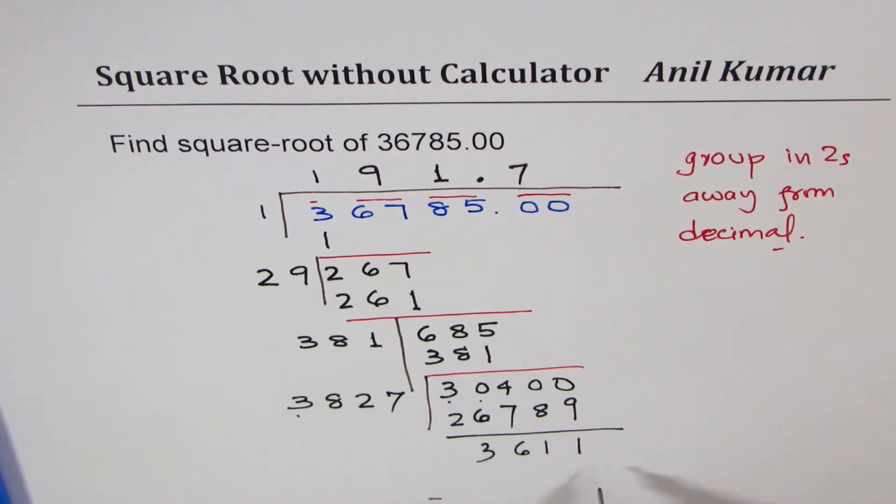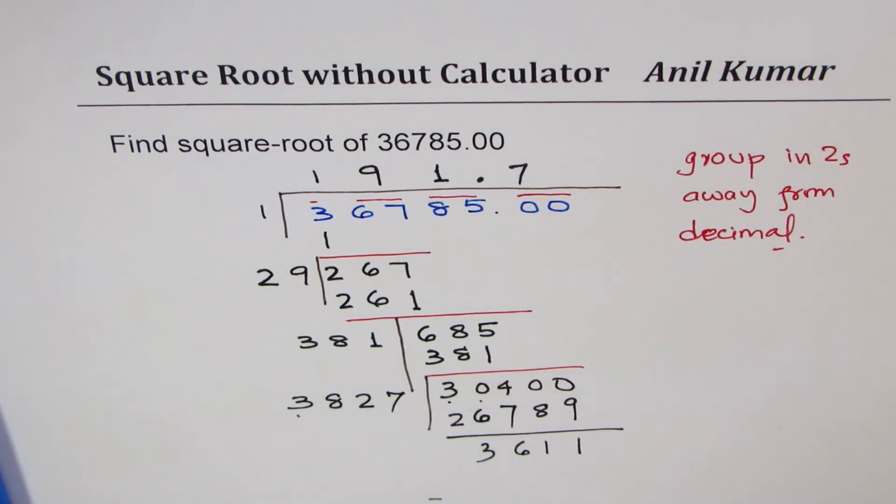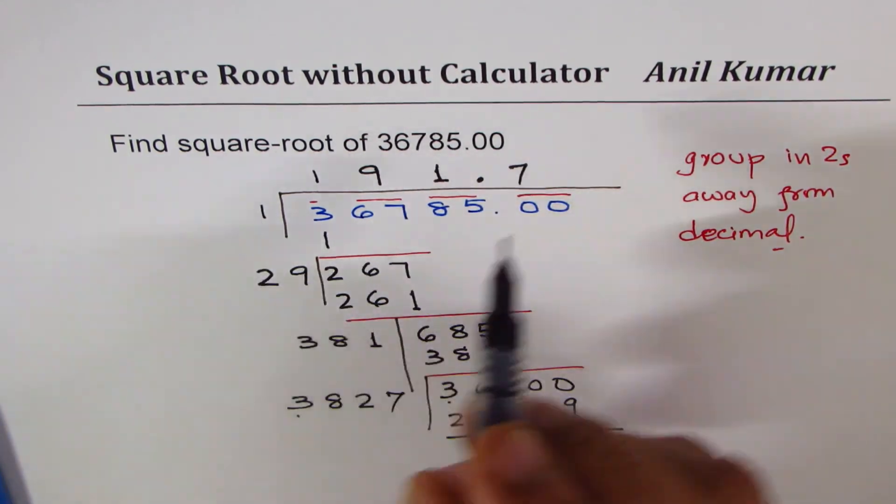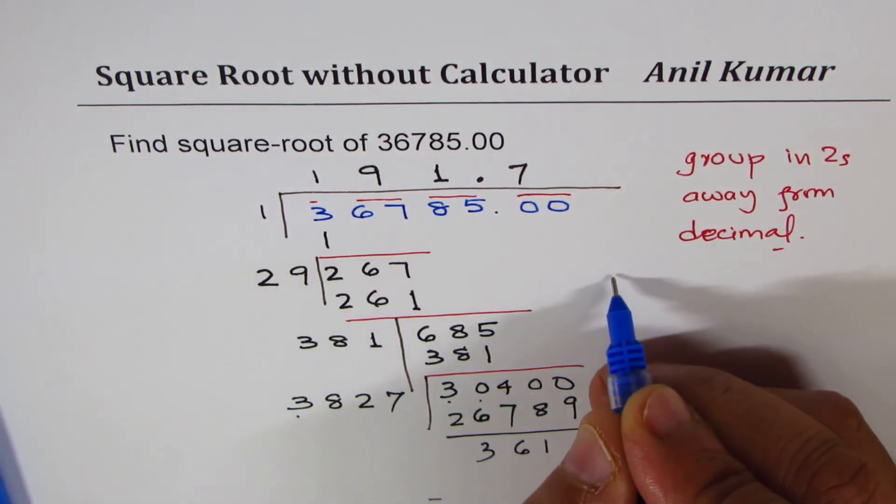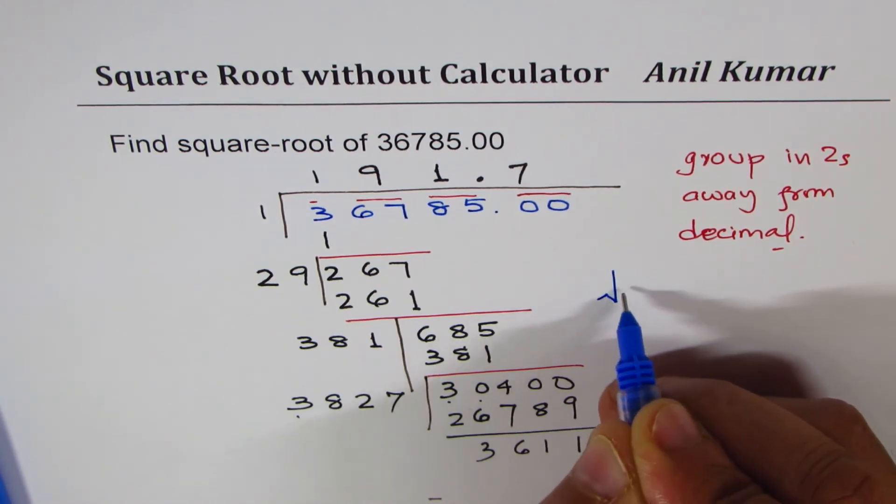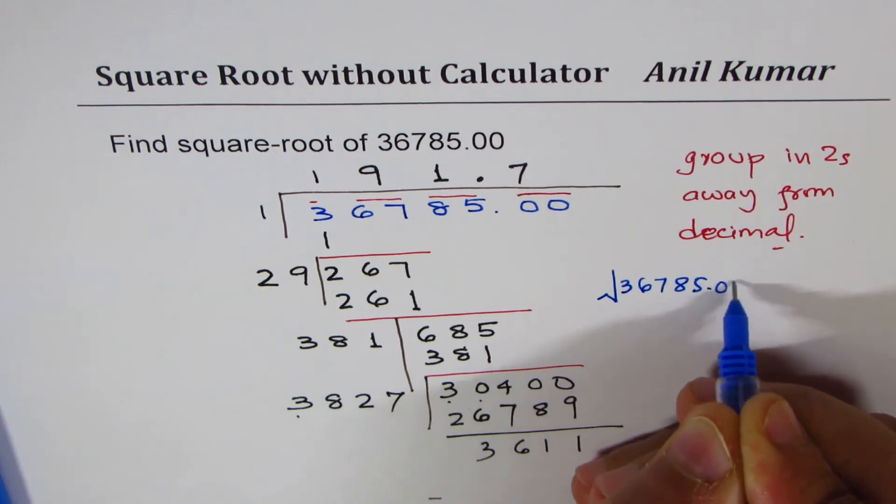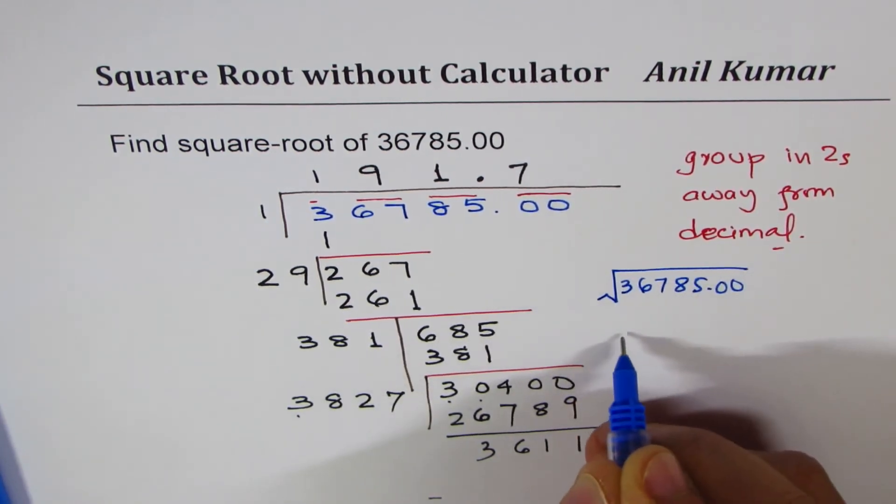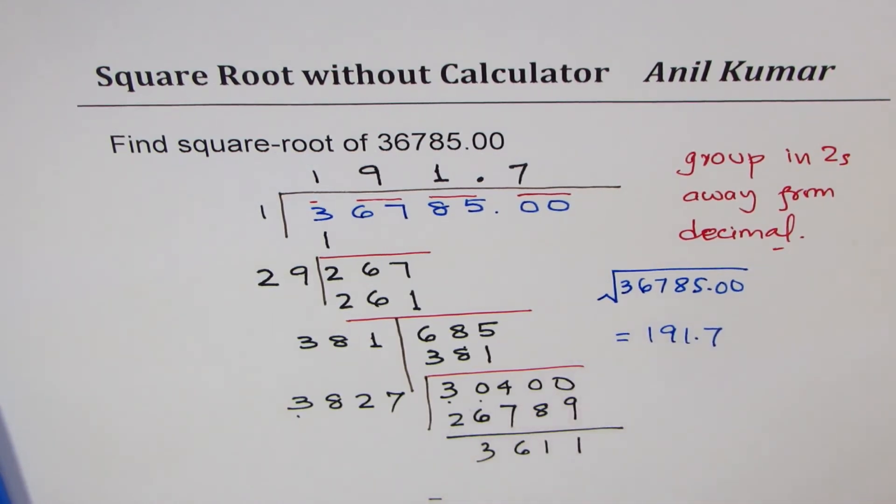So there is some remainder. If you want, you can go the next step. Writing with one decimal place is okay. So we can now write down the answer. The square root of 36785.00 is equal to 191.7. Let's close in at one decimal place.